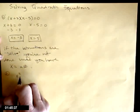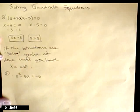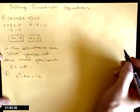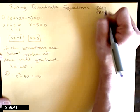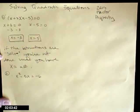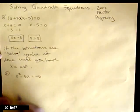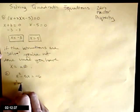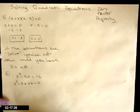If I have x squared minus 5x equals negative 6, we are using the zero factor property. That means I need a zero. I don't have a zero yet, so I need to move this negative 6 so I can get a zero on the right side. Add 6 to both sides, then factor.